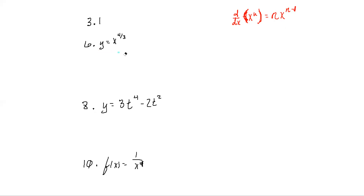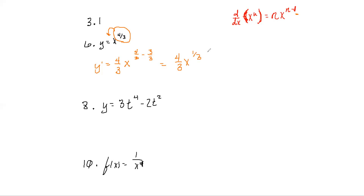Feel free to use the chat box at any time if you have suggestions about any of these answers. This is usually a pretty short session because we're basically doing the same thing in a variety of different ways. For problem 6, I bring the exponent 4/3 down, so y' = (4/3)·x^(4/3 − 3/3) = (4/3)·x^(1/3).